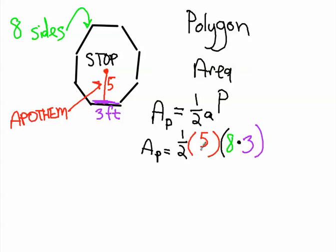And what it comes down to is half of five is 2.5, and then eight times three is 24.